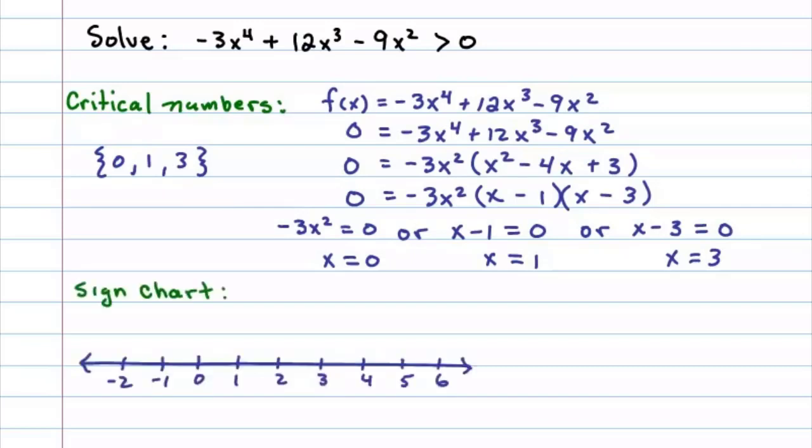Because we were given a strict inequality, we'll use an open dot at our critical numbers here: 0, 1, and 3. Now this breaks the number line up into four regions, and so we need to test values to determine where the function is positive or negative.